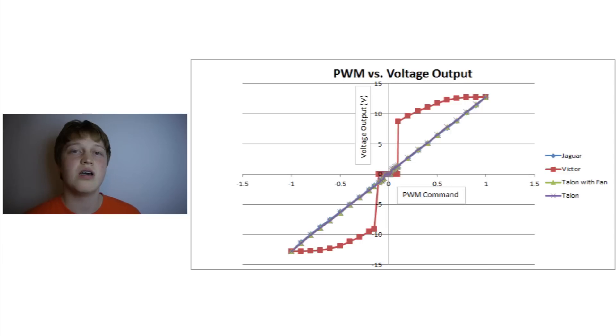They beta tested the Talon and provided us all with very useful information, so thank you for that. Ether pointed out that they were testing it open circuit, which means they didn't actually have a motor connected to it. They just tested the voltage coming out of it based off of what they're inputting from their serial. So what that means is the non-linearity of the Victor is a little bit exaggerated.